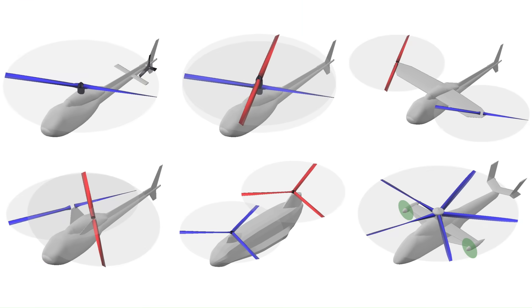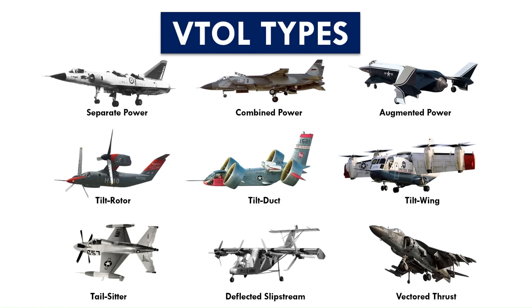These were some of the types of helicopters and their pros and cons. If you are interested in other VTOL types like the tilt rotor, tilt wing, tail sitter, etc., their design features and how they work are discussed in the linked video.